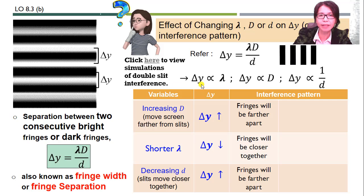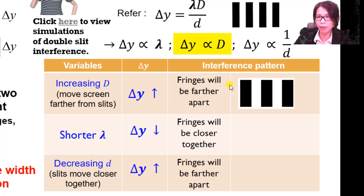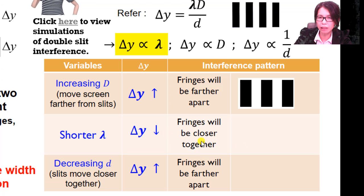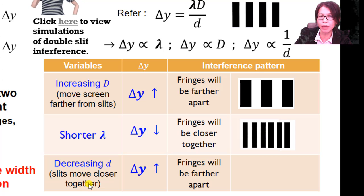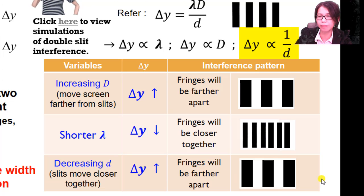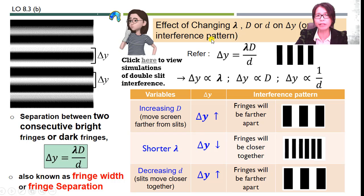Summarizing in a table: when we increase D — moving the screen further from the slit — ΔY increases and the fringes will be further apart. If we shorten the wavelength, ΔY decreases and the fringes will be closer together. If we decrease the slit separation — bringing the slits closer together — ΔY increases and the fringes will be further apart. This is the effect of changing wavelength, distance from screen, and slit separation on the interference pattern.